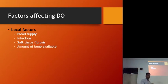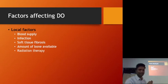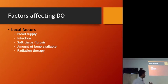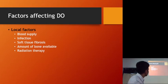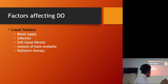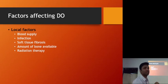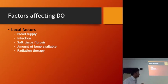Then we have the amount of bone available. Radiation therapy is also a factor — if the patient had a history of carcinoma and received radiation therapy, there will be reduction in blood supply to the bone. To perform distraction osteogenesis in a radiation therapy patient, you have to wait six months and then use hyperbaric oxygen therapy to increase blood supply, similar to managing osteoradionecrosis.